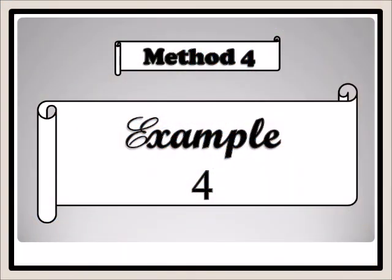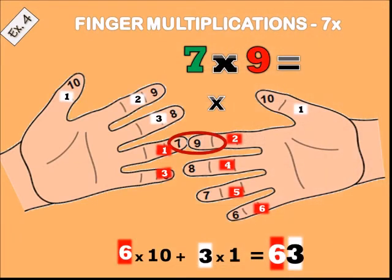Example four: seven times nine. Place the pointing finger and the ring finger together and count down: one, two, three, four, five, six — six times ten is sixty. On the left hand there are three fingers remaining and on the right one finger, so three times one is three. Sixty plus three equals sixty-three. Seven times nine is sixty-three.